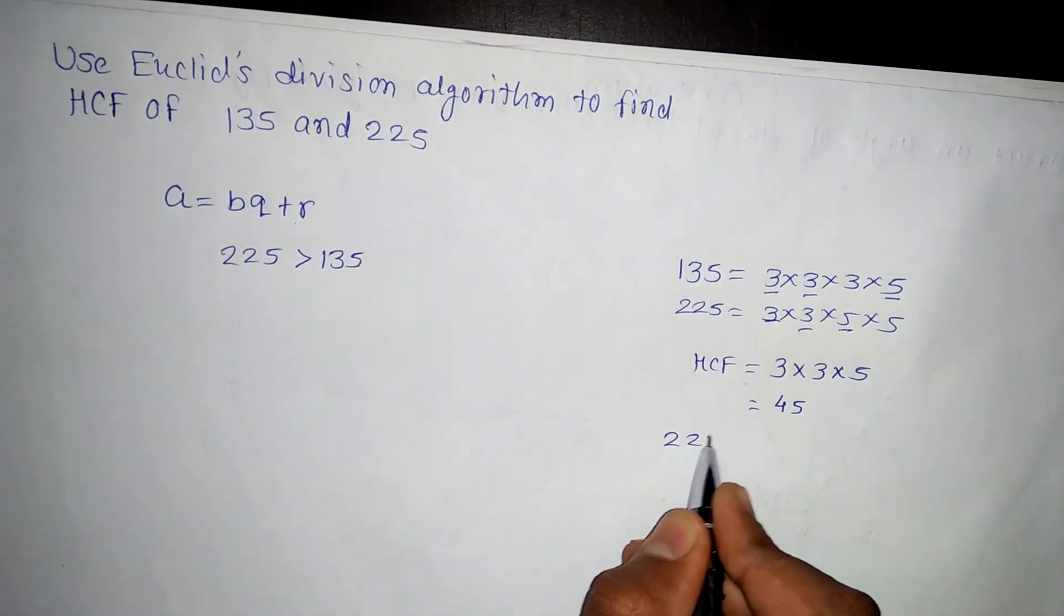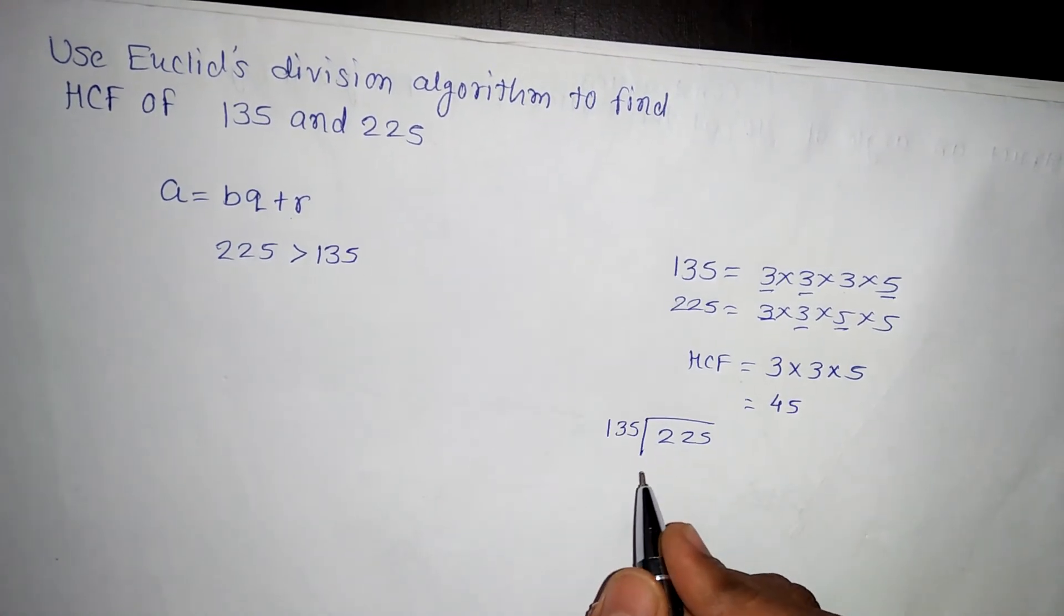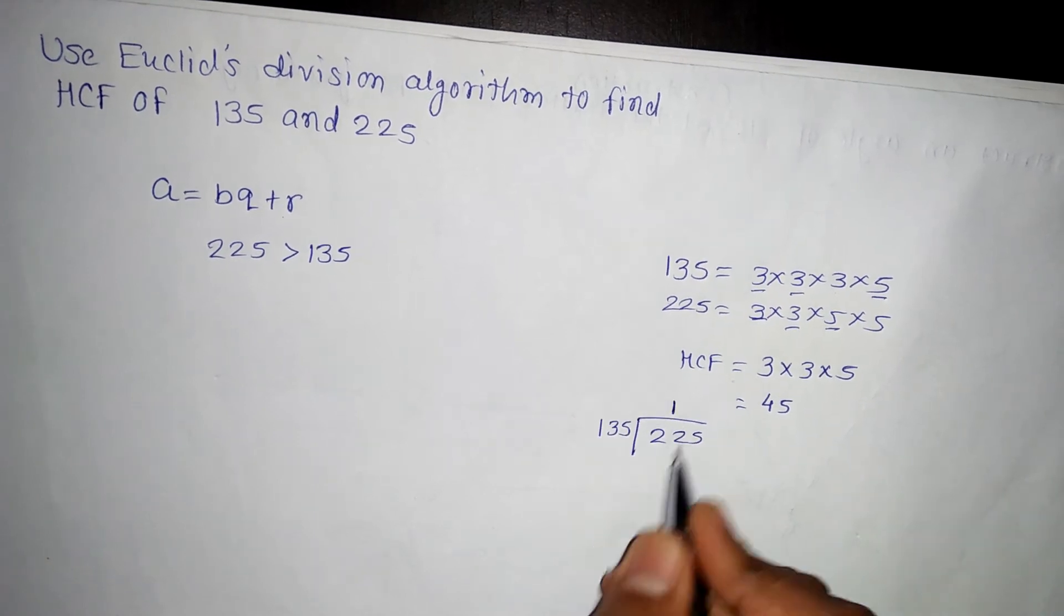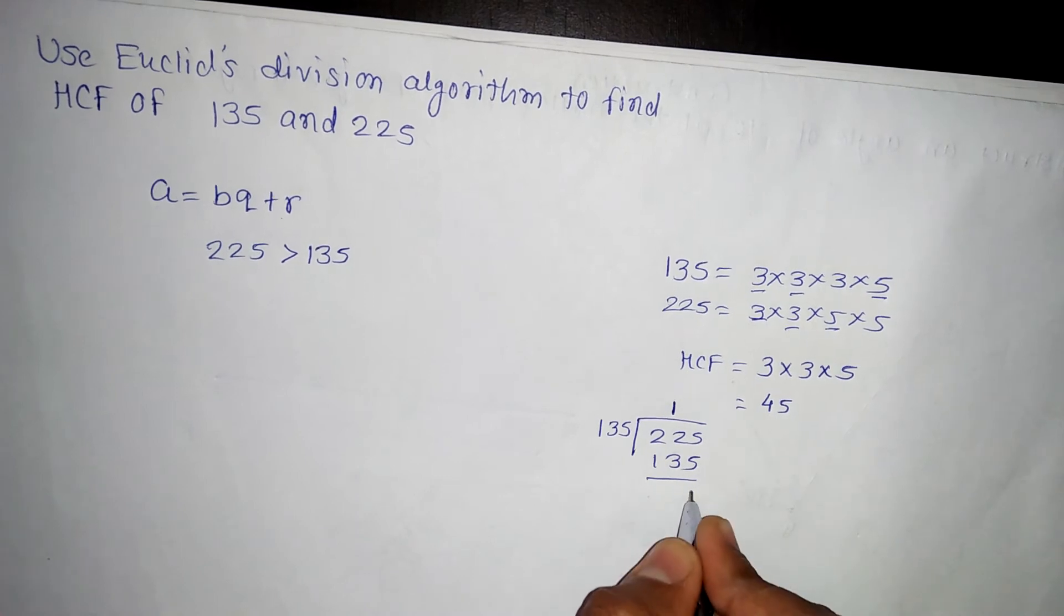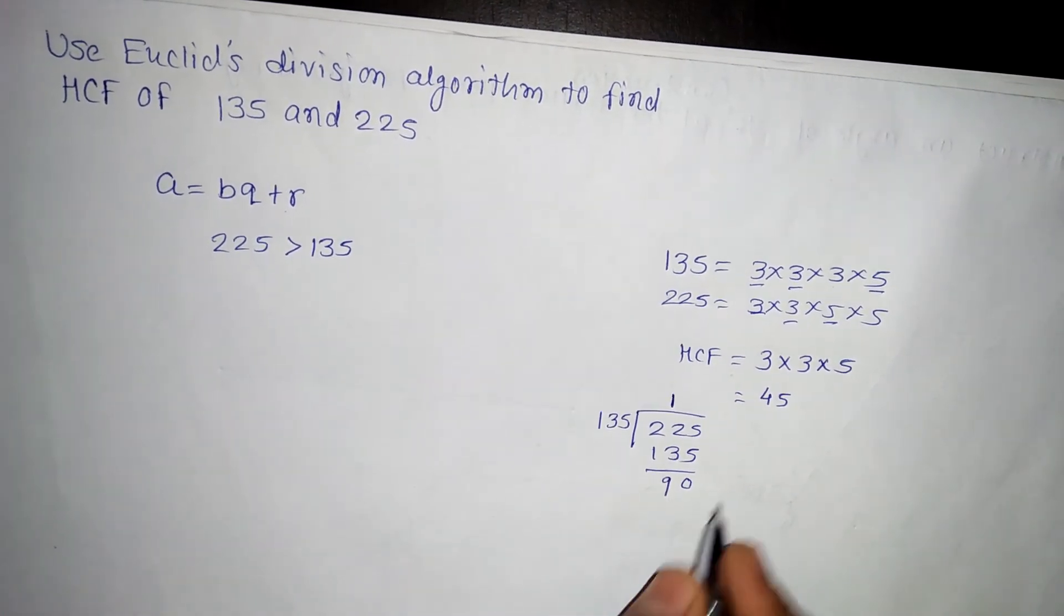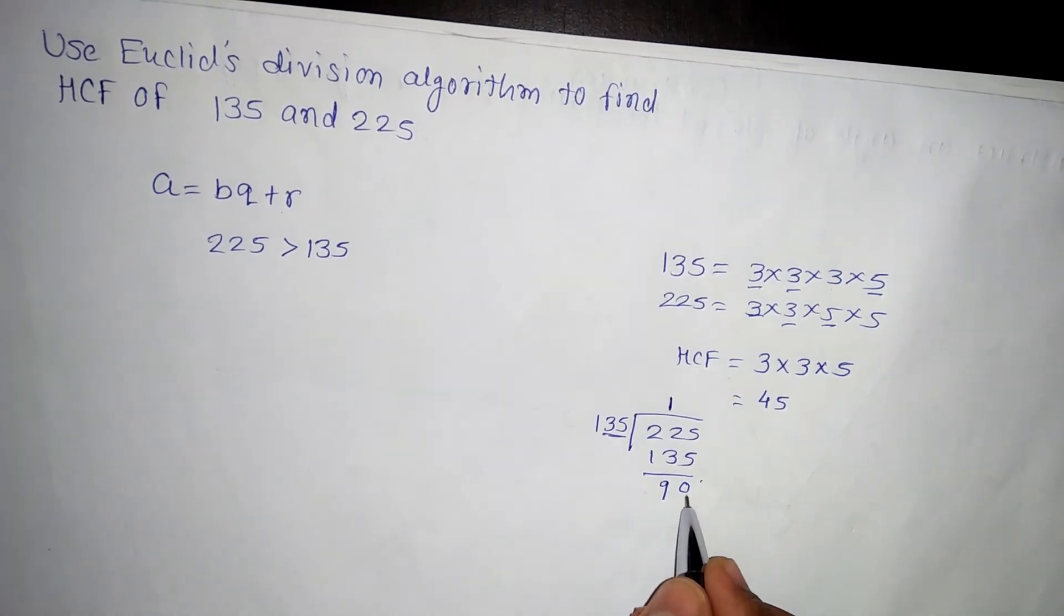So 225, I will try to divide by 135. Then here we should see 135, 2 times will be greater than that, so it is 1 times 135. We should take the difference. It is 0, 13 minus 22 means you'll get 90. Now this 135 I will divide it by this remainder 90.